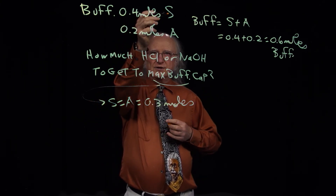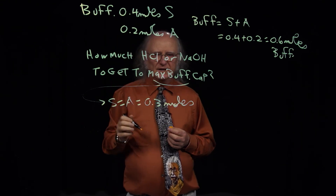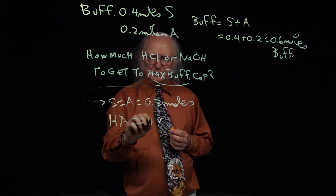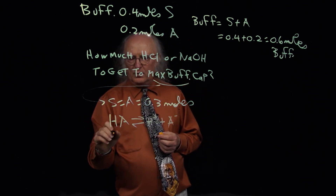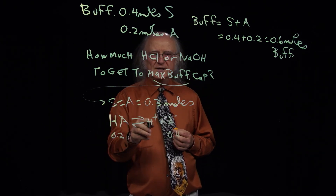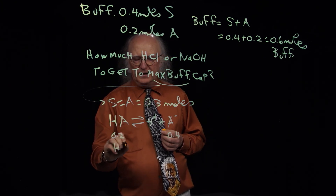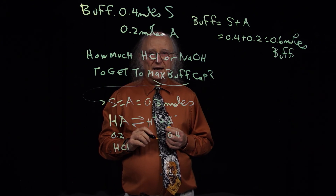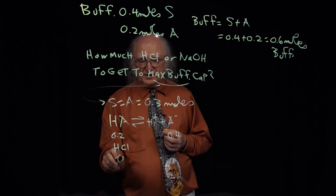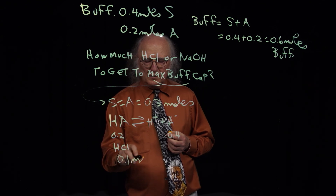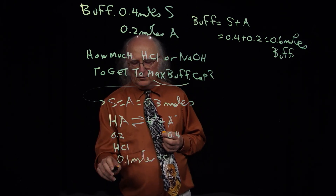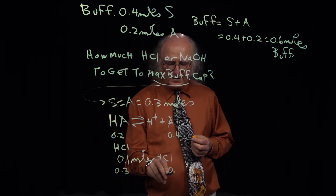I need to reduce the salt and increase the acid, so I need to drive the equation HA ⇌ H⁺ + A⁻ to the left, which means I need to add protons — that means adding HCl. I need to go from 0.2 up to 0.3 moles of acid, a difference of 0.1 moles. So I add 0.1 moles of HCl, and I will end up with 0.3 moles of acid and 0.3 moles of salt.